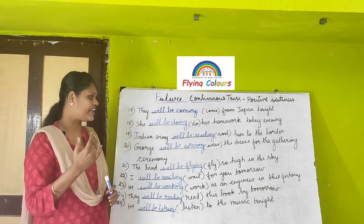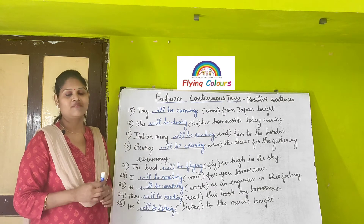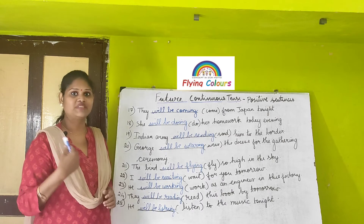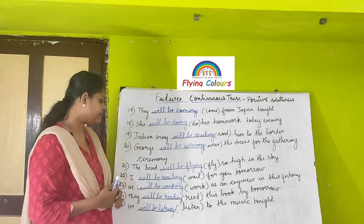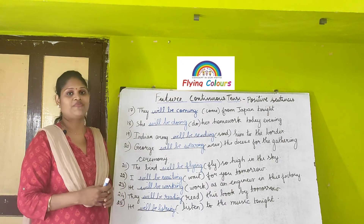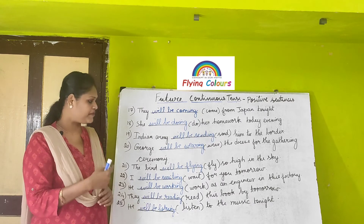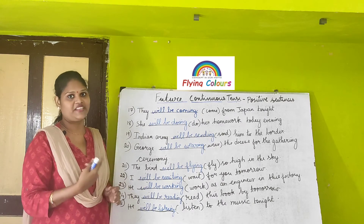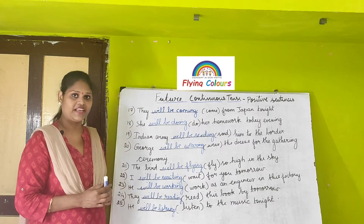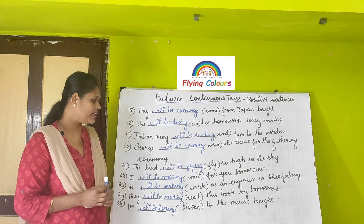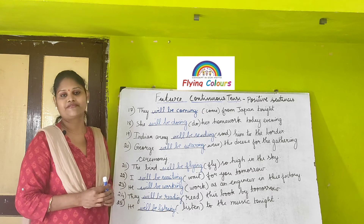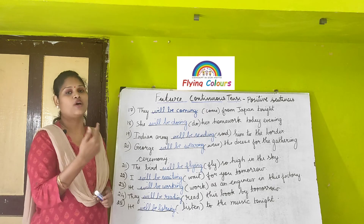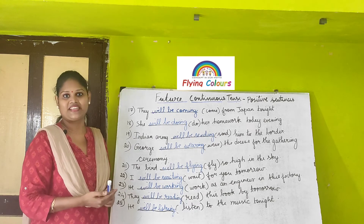Next: 'The bird will be flying so high in the sky.' The main verb is 'fly,' so 'will be flying.' Then: 'I will be waiting for you tomorrow.' 'I' is the subject, plus will plus be, plus 'waiting' — main verb 'wait' with -ING added. Then: 'He will be working as an engineer in the factory.' He is the subject, plus will plus be plus 'working' as the present participle.